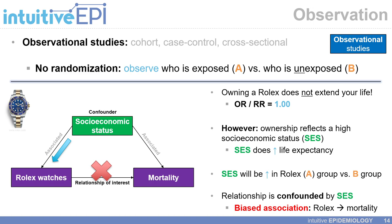We will revisit a familiar example: the relationship between owning a fancy, expensive Rolex watch and its impact on mortality. As we know, owning this watch does not necessarily extend your life, so if we estimated a causal effect of Rolex watch ownership on mortality, we'd expect an odds ratio or risk ratio of one. However, ownership of a Rolex reflects high socioeconomic status, or SES, and SES does increase life expectancy. Therefore, SES will be higher in the exposed group, and the relationship between watch ownership and mortality is confounded by socioeconomic status.